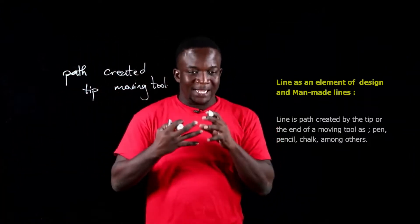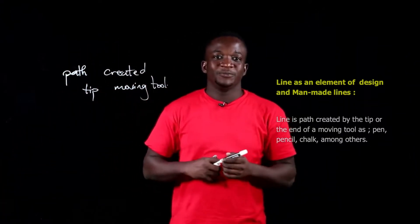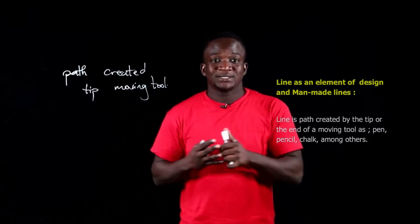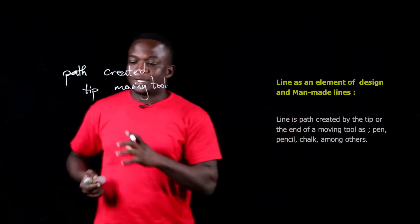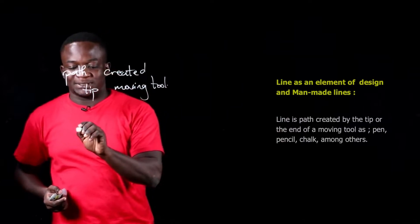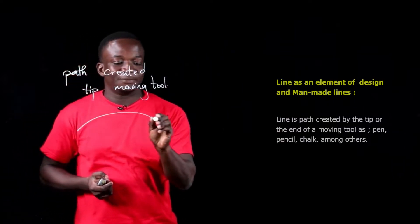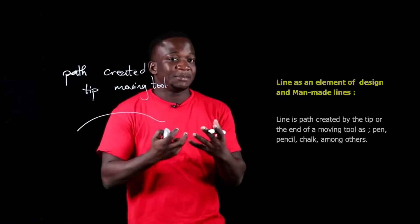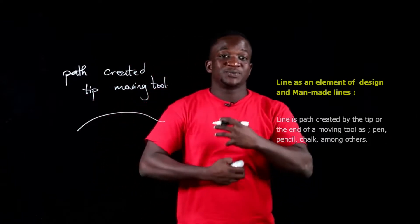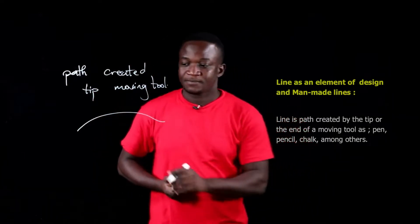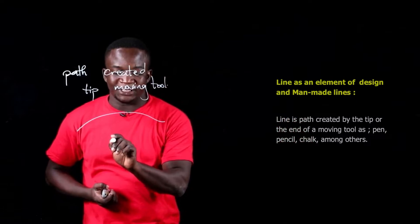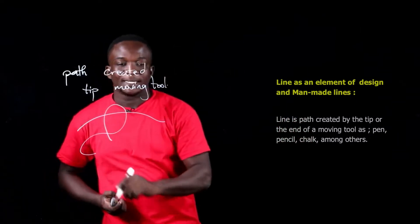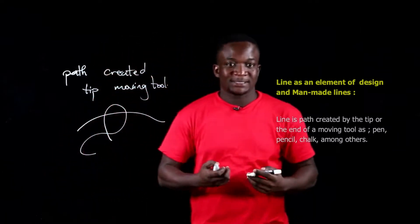The tip of a moving tool goes from one point to the other. So if I have this and I create a path from here to here, it is a line. It doesn't matter how it looks because we have different types of line. So if I create from this path to this path, it is a line.